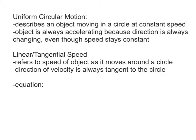I say constant speed as opposed to constant velocity because the object is always accelerating. It's accelerating because if something moves in a circle, the direction is changing. So even though speed stays constant, it has to be accelerating because of that change in direction. When we refer to speed, we're talking about the linear speed of the object as it moves in a circle, also sometimes called tangential — because the direction is always going to be tangent to the circle.